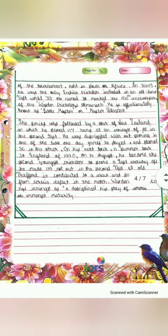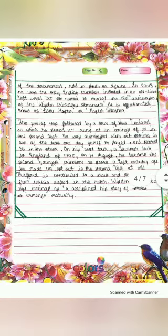The series was followed by a tour of New Zealand in which he scored 117 runs at an average of 58.5 in the second Test. He was dismissed without scoring in one of the two one-day games he played and scored 36 in the other. On his next tour, a summer tour to England in 1990, on 14 August, he became the second youngest cricketer to score a Test century, making 119 not out in the second Test.